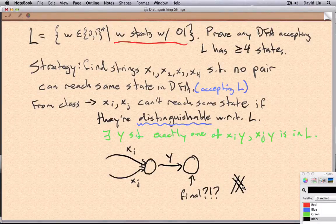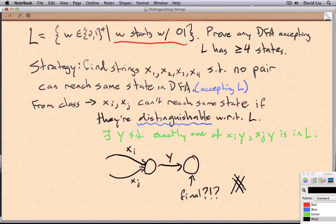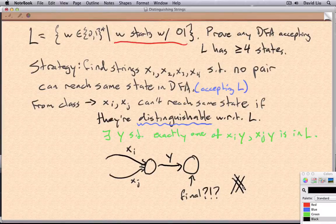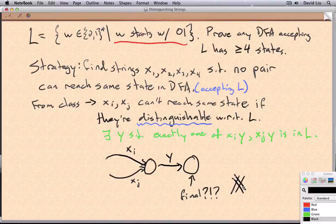Notice that in this case we have four different strings, so there's six possible pairs of strings. And so we would need to make an argument for distinguishability for each of the six pairs. We would need six little proofs.